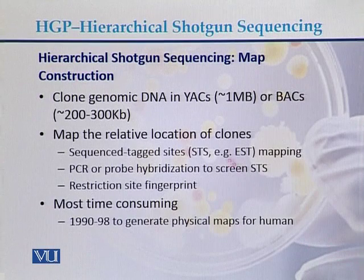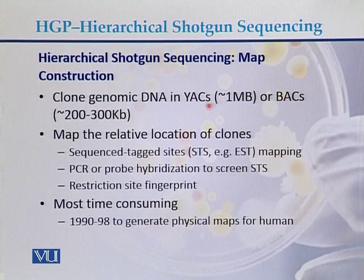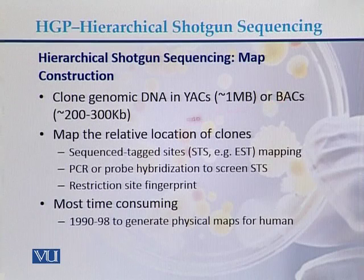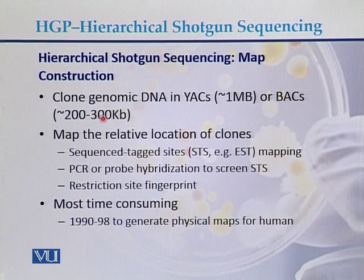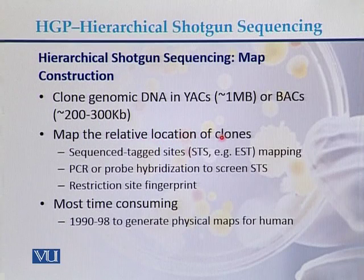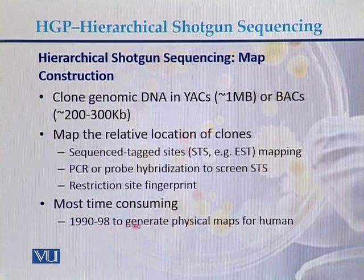In hierarchical shotgun sequencing, the first step was to clone genomic DNA either into yeast artificial chromosomes, which can accommodate DNA up to 1 MB, or into bacterial artificial chromosomes, which can accommodate DNA between 200 KB and 300 KB. The second step was to map the relative location of the clones. The third step — actually the most time-consuming — was to generate a physical map of the genome.